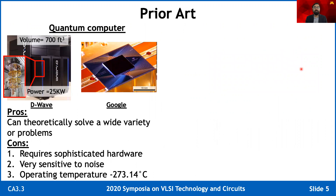Let's look at some prior and contemporary art. Quantum computers solve the Ising model and can theoretically solve a wide variety of problems. However, they need very sophisticated hardware to maintain quantum phenomena. For example, the D-Wave system shown here has a volume of 700 cubic feet, while their actual chip is rather small and similar in size to Google's quantum computer chip. They also require 25 kilowatts of power, because quantum computers are very sensitive to noise, and their operating temperature requirement of minus 273 degrees Celsius requires significant energy. As of right now, quantum computers are not practical for many applications.